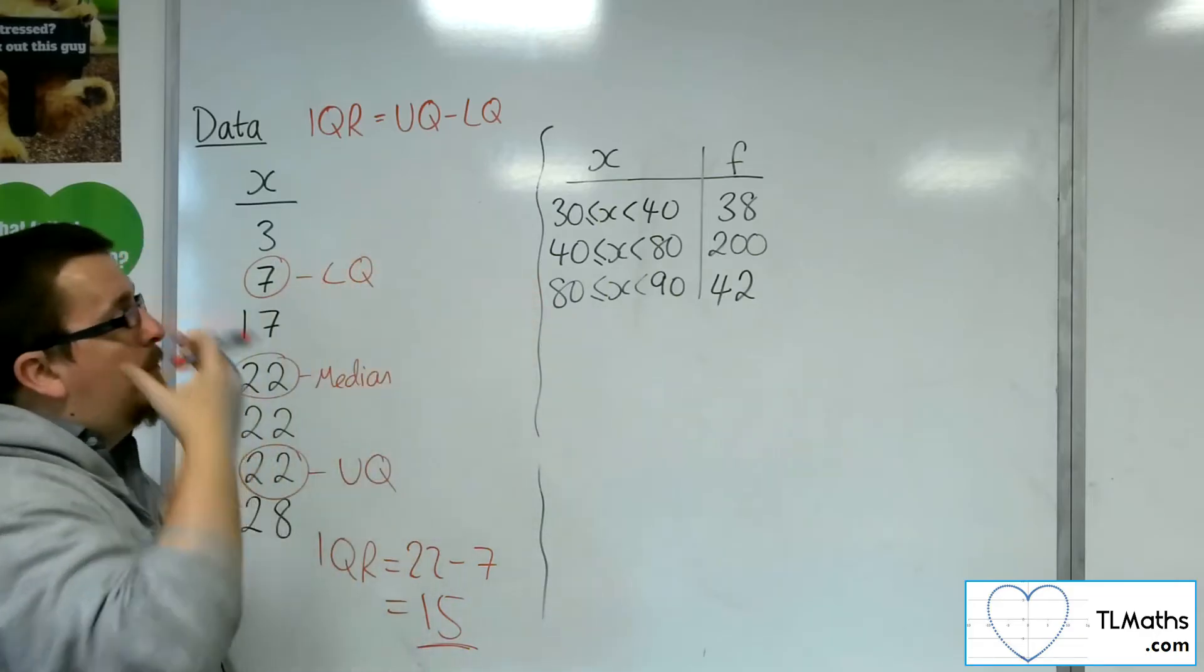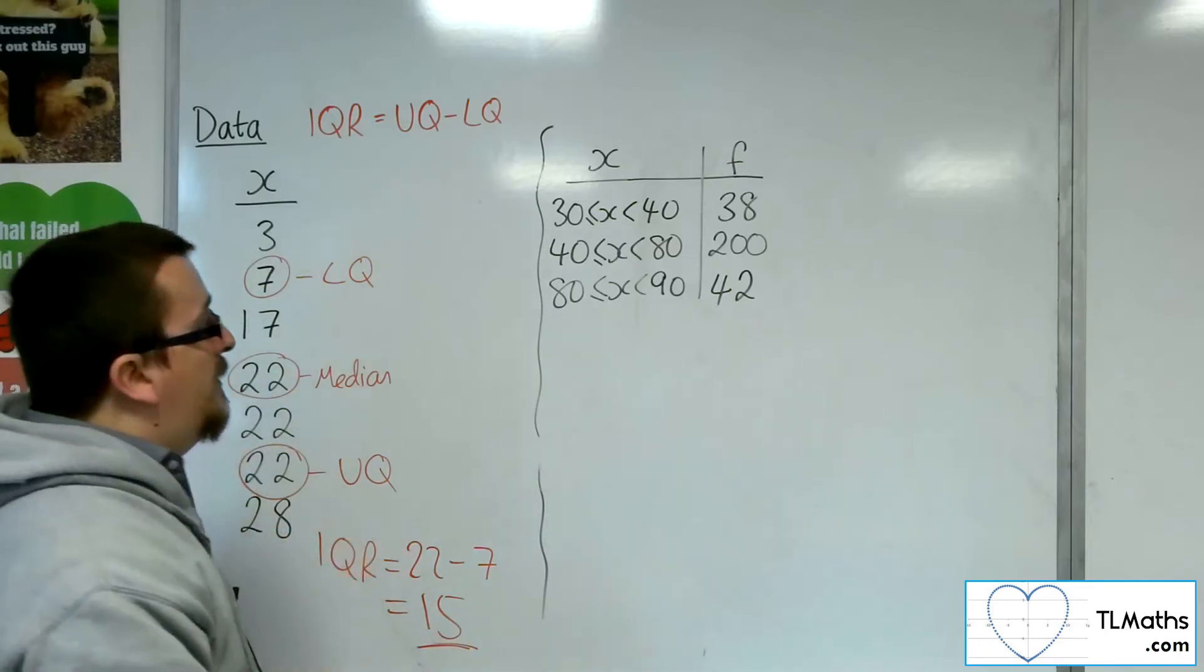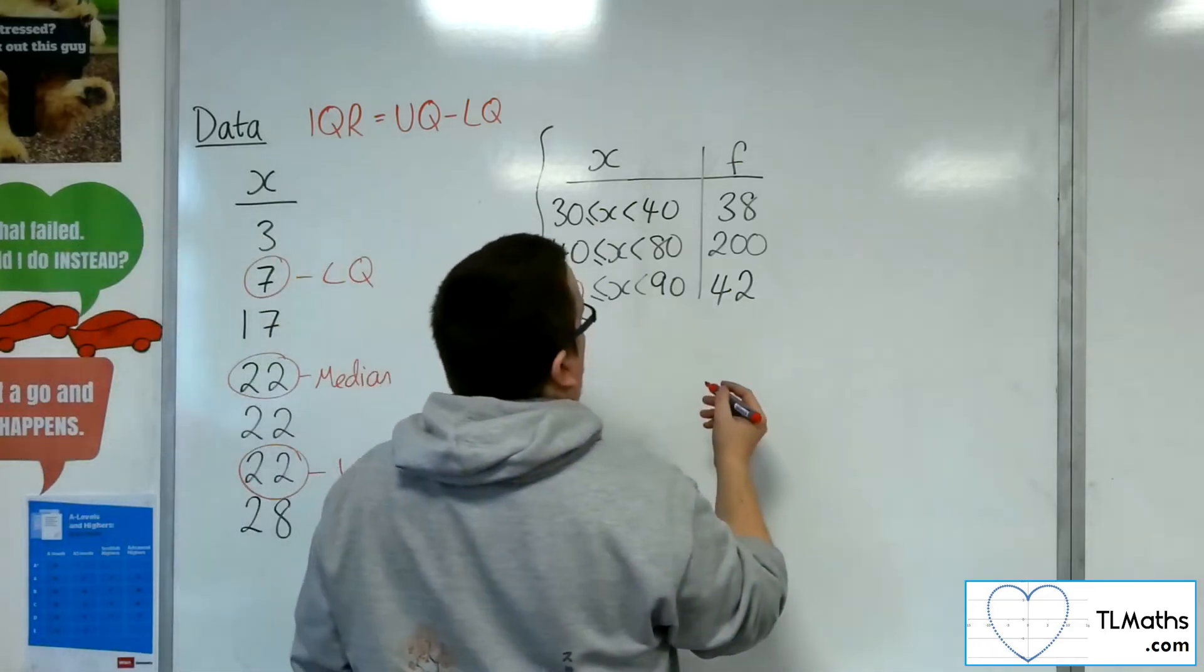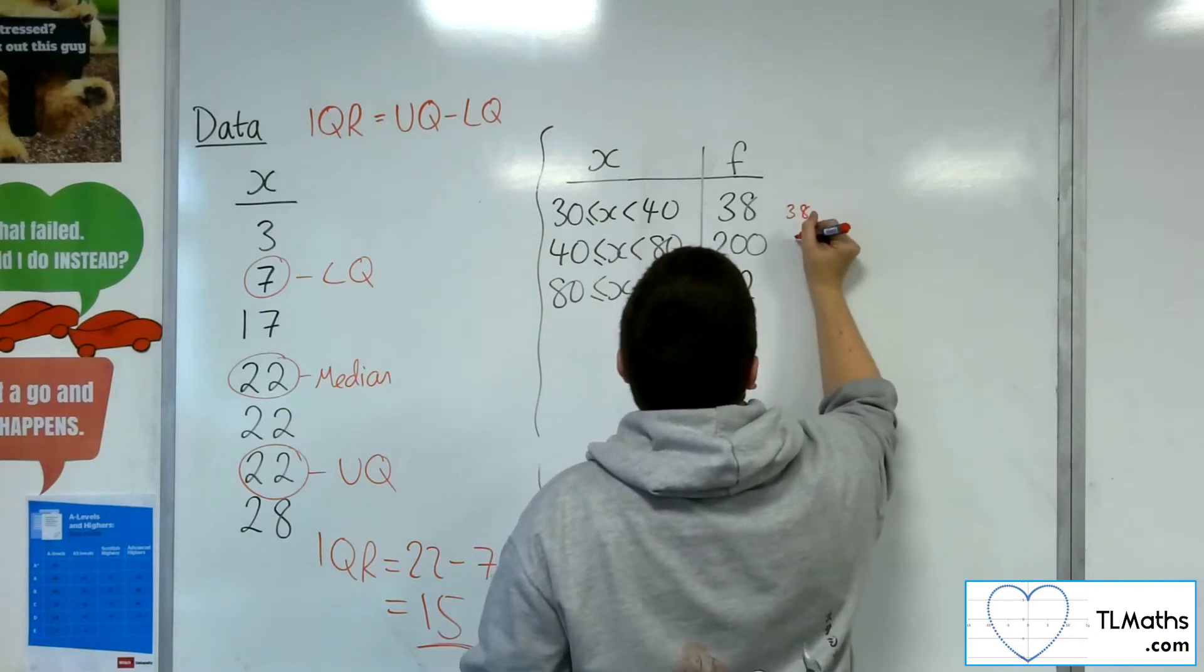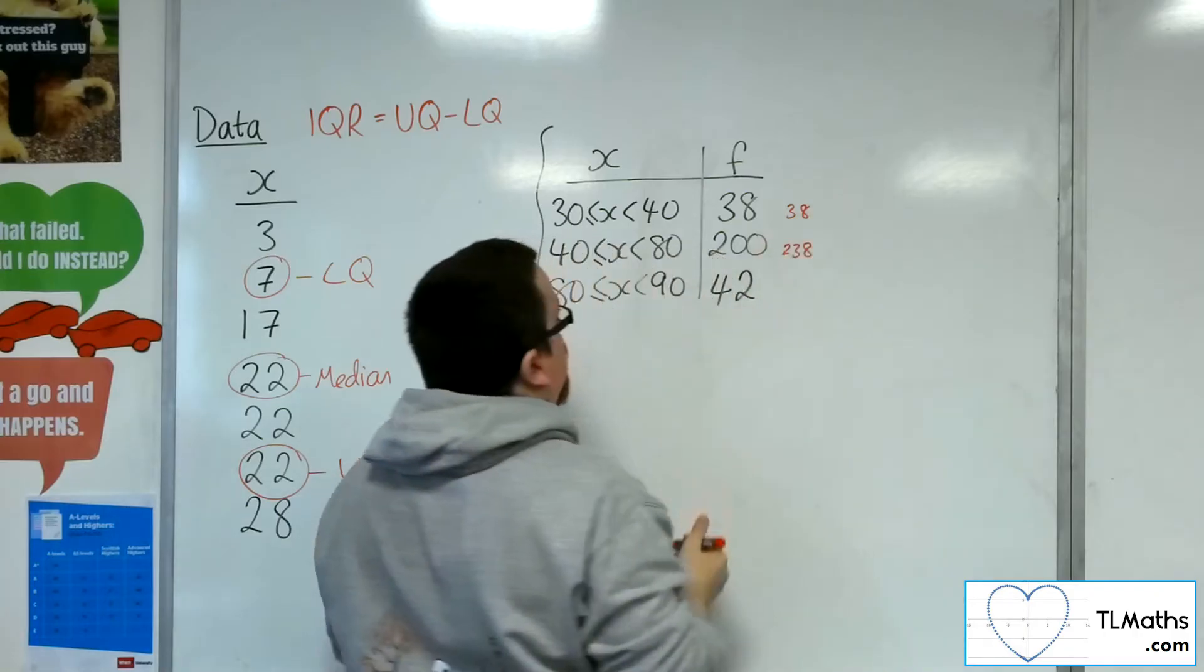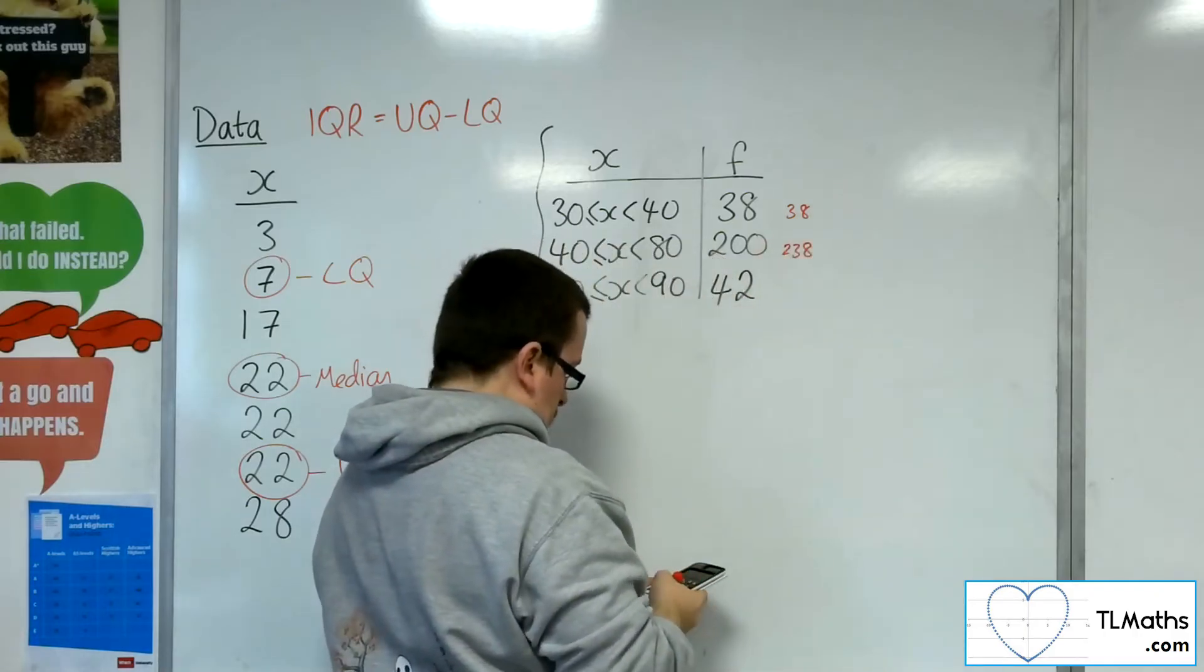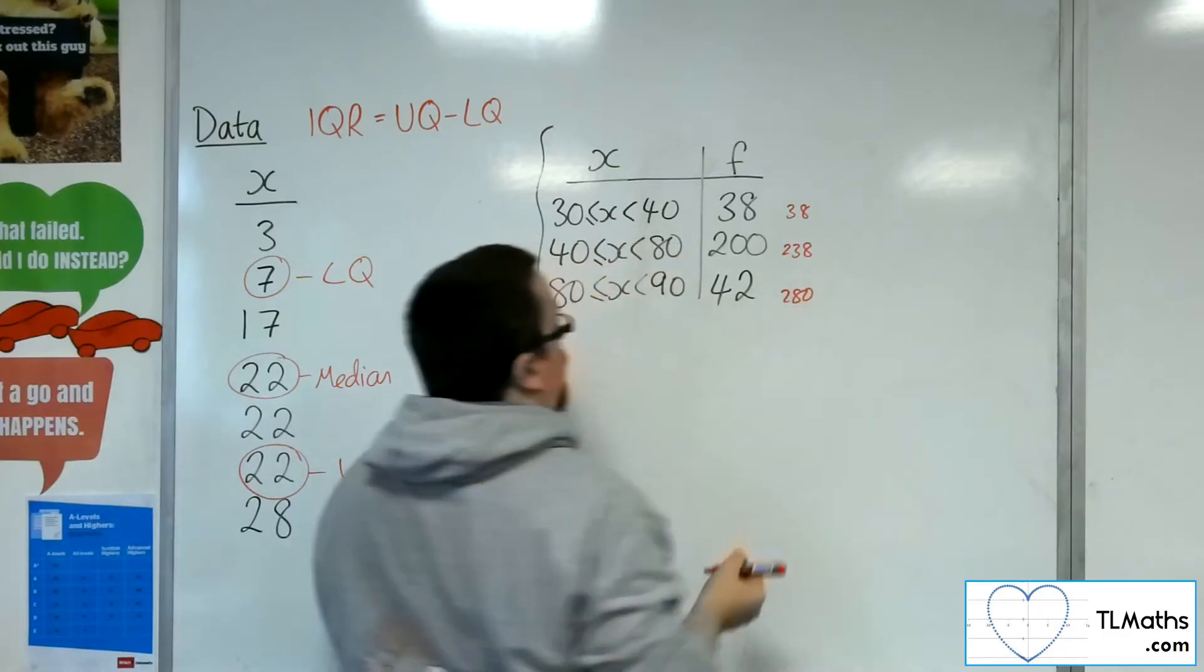For the second example, I'm going to have to use interpolation to find the lower quartile and upper quartile first. So I need to have a cumulative frequency down the side just to figure out the position. So that would be 38, 238. And then 238 plus 42 gets me to 280. Total frequency 280.